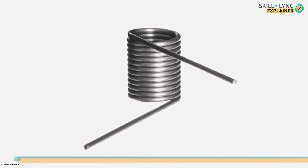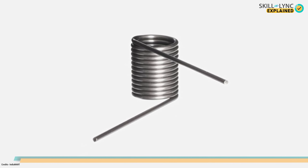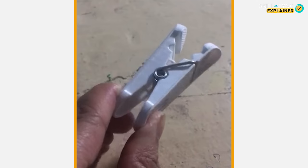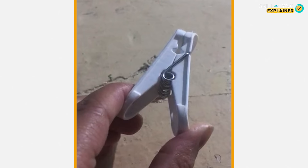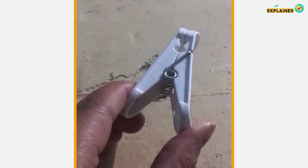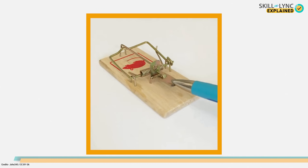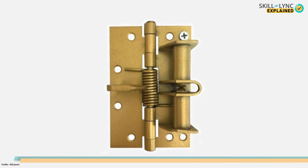Next we have torsion springs. A torsion spring is similar to a closed loop helical spring, except that the ends of the spring are extended away from the axis in a non-helical manner. They are used to store twisting force. If you've noticed a cloth clip, when you press the ends the clip gets widened, and as soon as you release the ends the clip is restored to its original position. In torsion springs, a torque is developed in the opposite direction which helps the spring restore back. These springs also find application in mouse traps and door hinges.